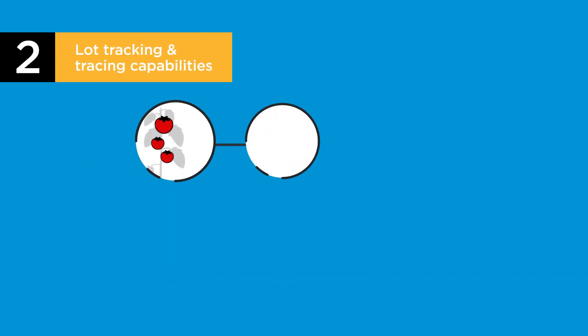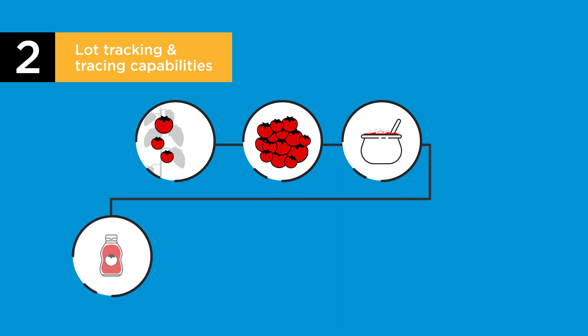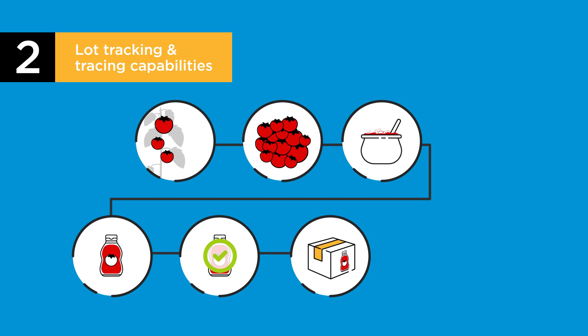An ERP should be able to track the raw material origin, production processes, and finished product movement throughout the supply chain, enabling manufacturers to comply with regulations and ensure product quality.